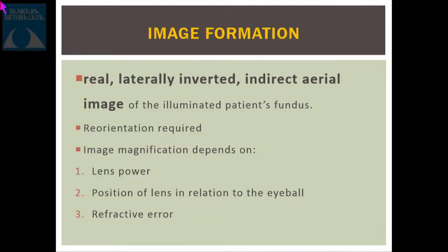The image formed is real, because it exists in the aerial space between the condensing lens and the observer — that is, the ophthalmologist. It is inverted: up will appear down. And it is laterally inverted: medial will appear lateral, and lateral will appear medial.